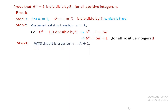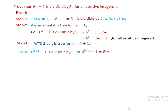Step 3: we want to show it is true for n equal to k plus 1. Our claim becomes: 6 to the power of k plus 1 minus 1 is divisible by 5, that is, 6 to the power of k plus 1 minus 1 equals 5 times m for all positive integers m. Starting from the left-hand side, applying the exponential rule, 6 to the power of k plus 1 becomes 6 to the power of k times 6, so the expression is 6 times 6 to the power of k minus 1.